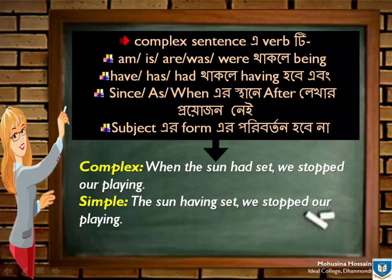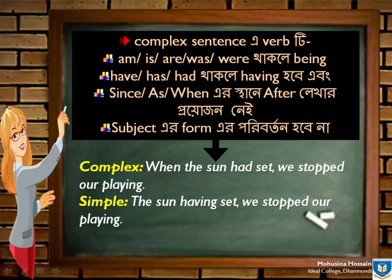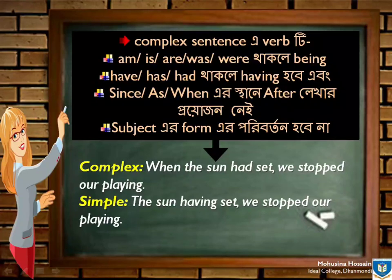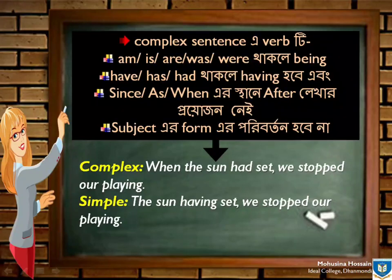আবার first rule এর মতোই verb টি Principal verb না হয়ে Am, Is, Are, Was, Were, Being অথবা Have, Has, Had, Having হয়, তখন এসময় Since/As এর পরিবর্তে 'After' লেখার প্রয়োজন নেই। For example: Complex এ যদি 'When the sun had set, we stopped our playing' থাকে, সেটি Simple এ গিয়ে হবে: 'The sun having set, we stopped our playing.'